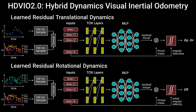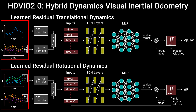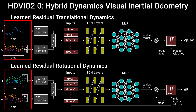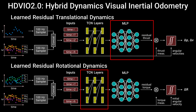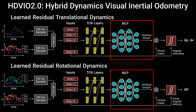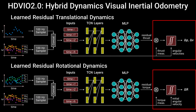In contrast to prior work, our learned dynamics model does not require access to the full drone state. Only the commanded thrust and torques, as well as the gyroscope measurements, are needed. These inputs are processed by two temporal convolutional networks — one predicts a residual thrust and the other predicts a residual torque. The predicted residuals are then added to the measured thrust and torque, and the resulting signals are integrated to estimate updates in velocity, position, and relative orientation.